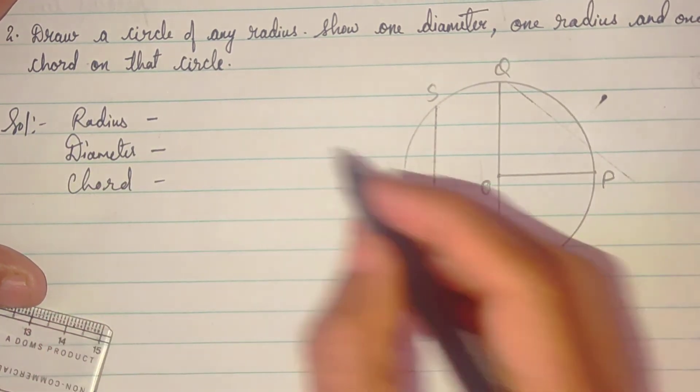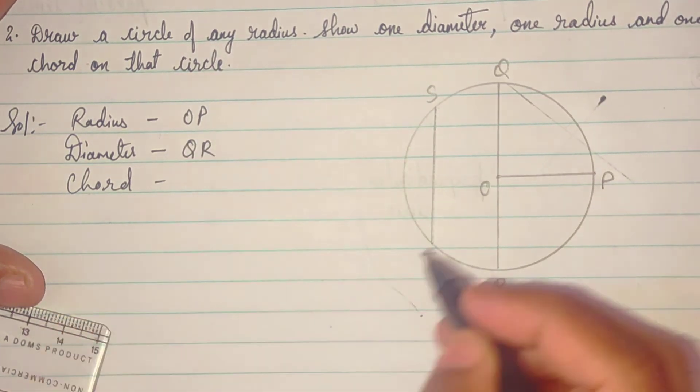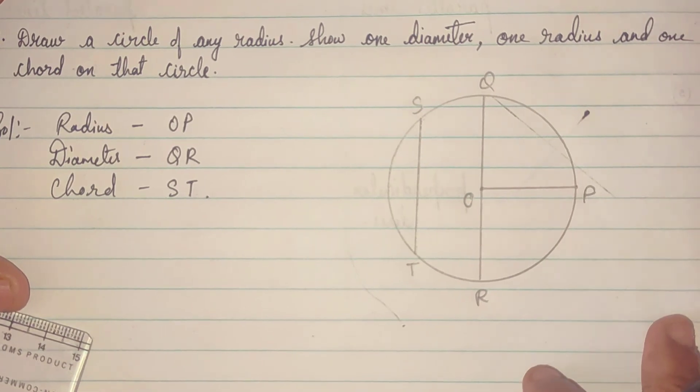So, radius is what? OP. Diameter is QR. And chord is ST.